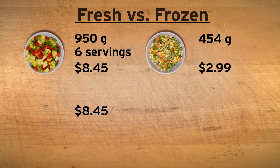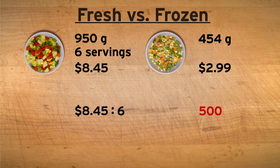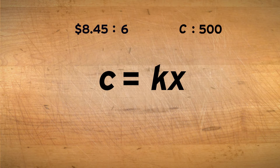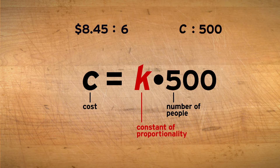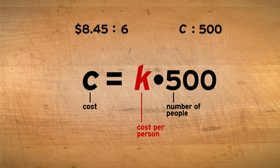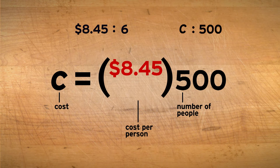The fresh vegetables cost $8.45 for six servings — that's a ratio of 8.45 to 6. We need to know what the cost would be for 500 people. I'll call the cost C. The total cost is proportional to the number of people, so we can set up the proportional equation C equals KX to solve this. C is the total cost and X is the number of people. We can make X equal to 500 right away. K is the constant of proportionality — we can think of that as the cost per person. Because $8.45 is enough for six people, K equals 8.45 over 6.